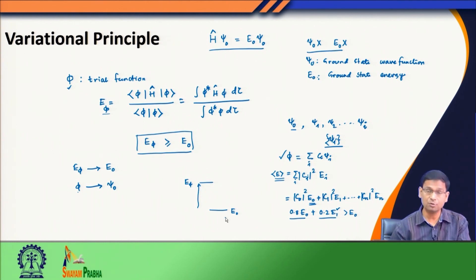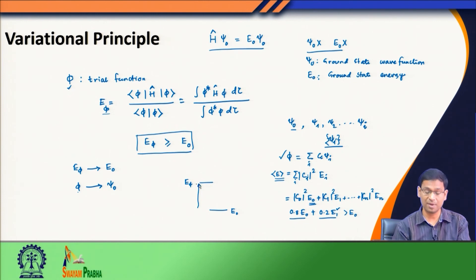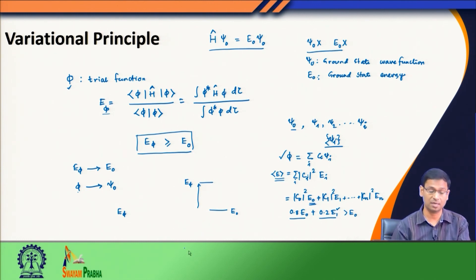How would I come from E_φ to E₀? I will go from φ to ψ₀ — I can approach the true exact wavefunction if I can bring E_φ as low as possible. That means I can minimize this E_φ function — and whatever is the lowest possible value of E_φ, that would be the best approximation of the ground state energy given the trial function I have chosen.